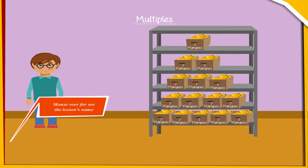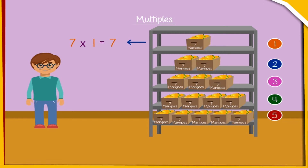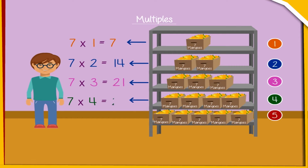Multiples. Jatin is in his backyard where his father has kept some cartons of mangoes. In each carton there are 7 mangoes. He placed cartons in rows of 1, 2, 3, 4, 5, and so on. The second row has 7 × 2 = 14 mangoes. Likewise, the third row has 7 × 3 = 21 mangoes, the fourth row has 7 × 4 = 28 mangoes, and the 5th row has 7 × 5 = 35 mangoes, and so on.